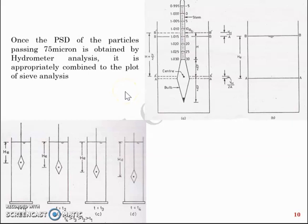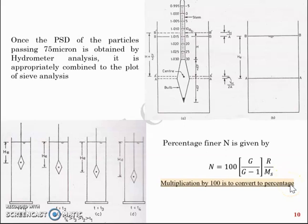Once you have the particle size distribution of that 50 grams you can extrapolate that to fit 60 grams of the soil which was in the original state. By doing that you can have a combined plot of the sieve analysis and the hydrometer analysis. The percentage finer n is given by the expression 100 × (G/(G-1)) × (r/ms), where r is the hydrometer reading and ms is mass of soil solids.